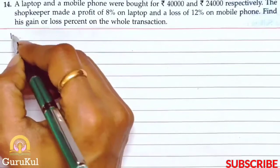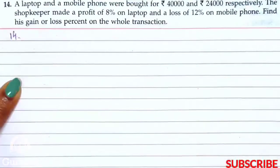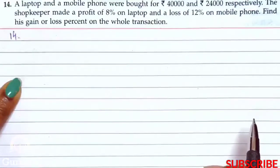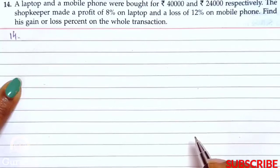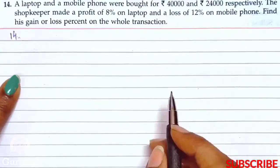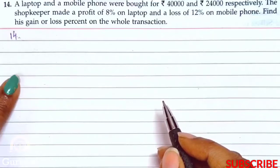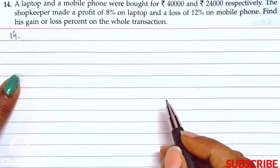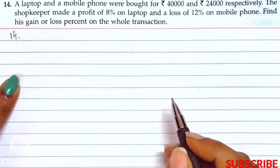Question number 14: A laptop and a mobile phone were bought for Rs. 40,000 and Rs. 24,000 respectively. The shopkeeper made a profit of 8% on the laptop and a loss of 12% on the mobile phone. Find his gain or loss percent on the whole transaction.